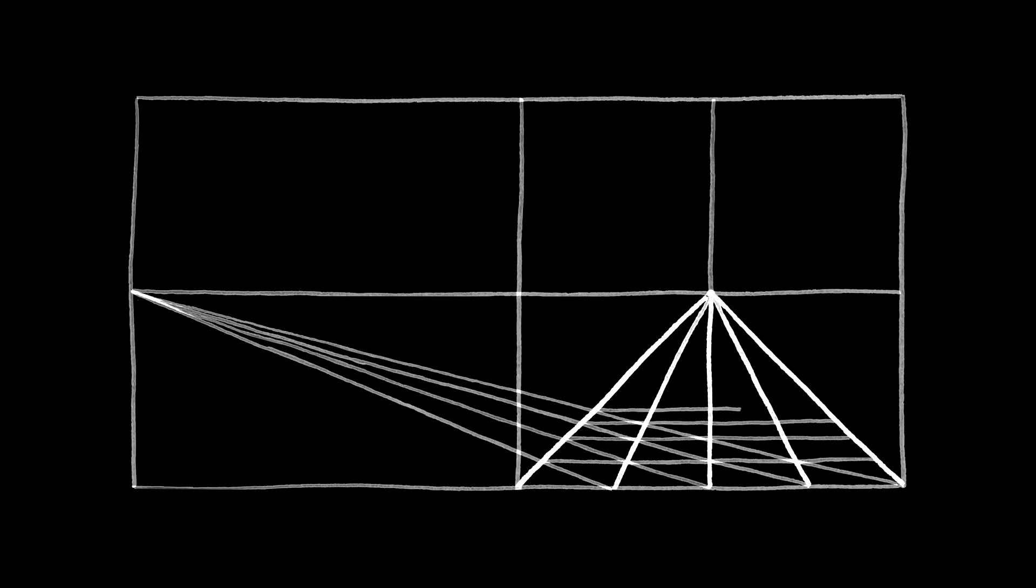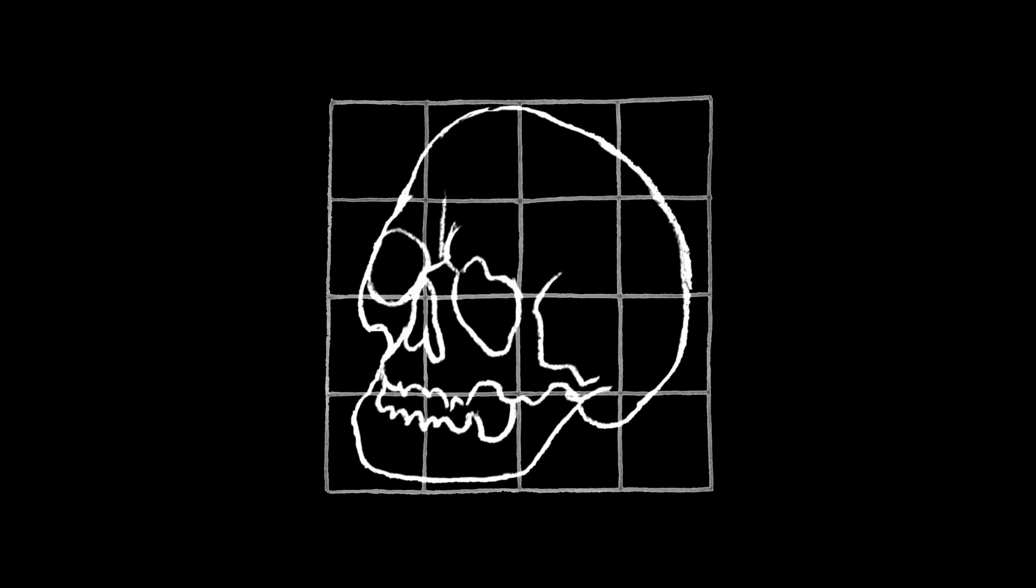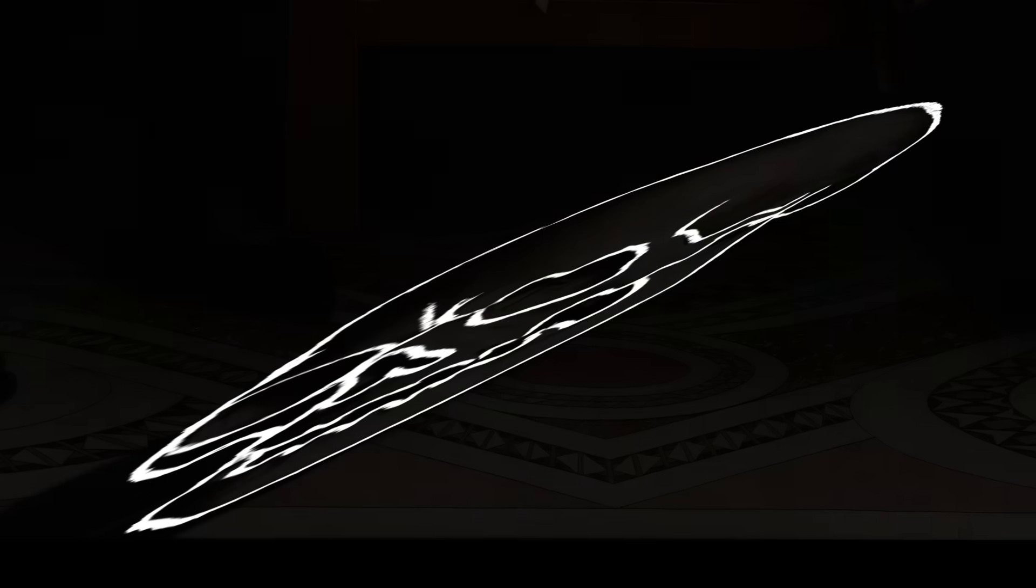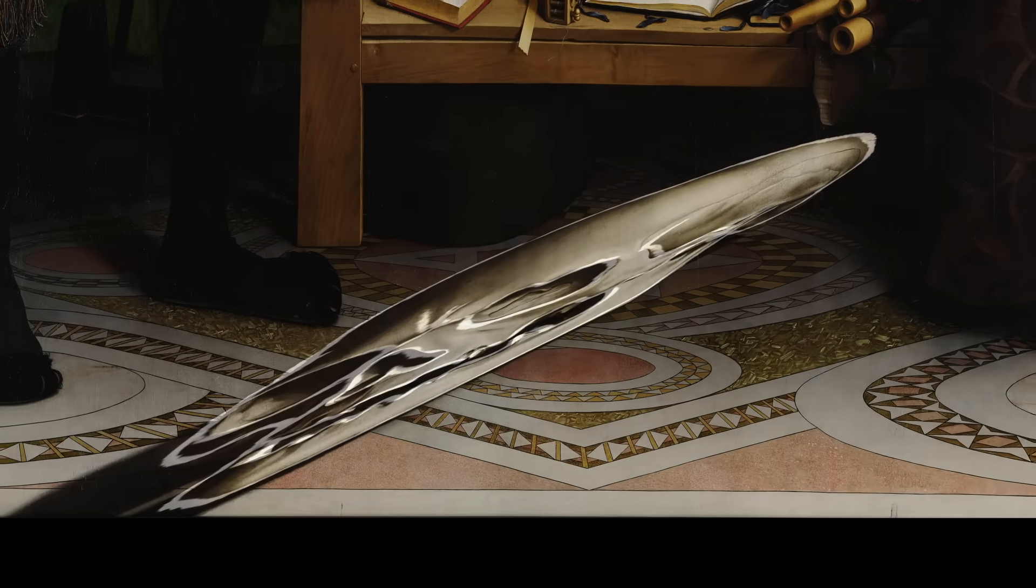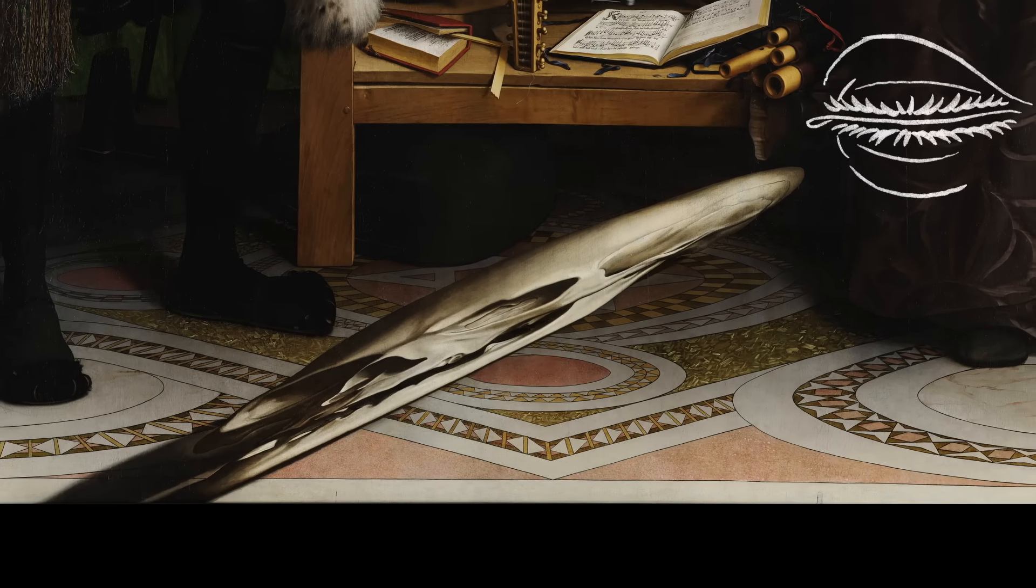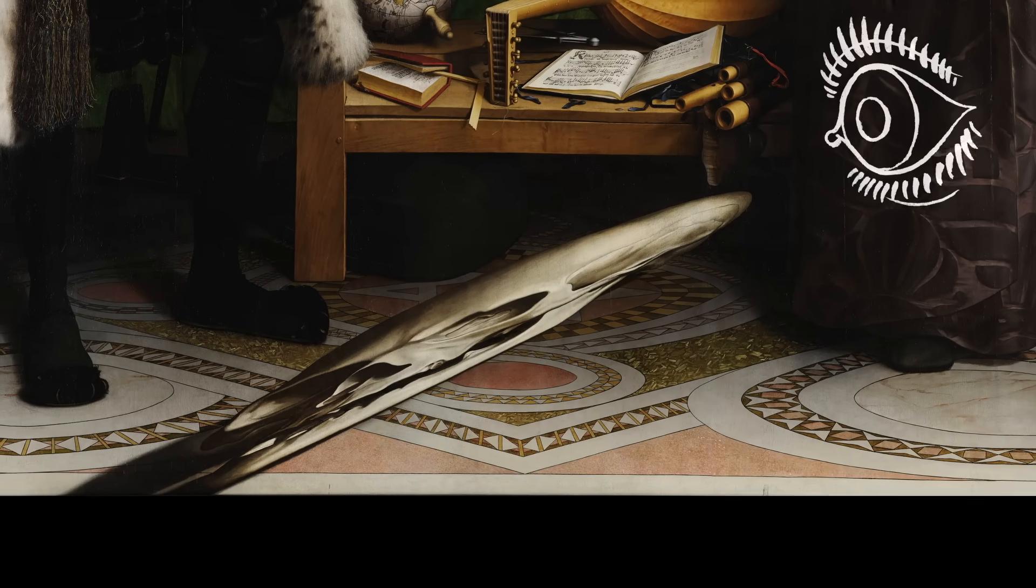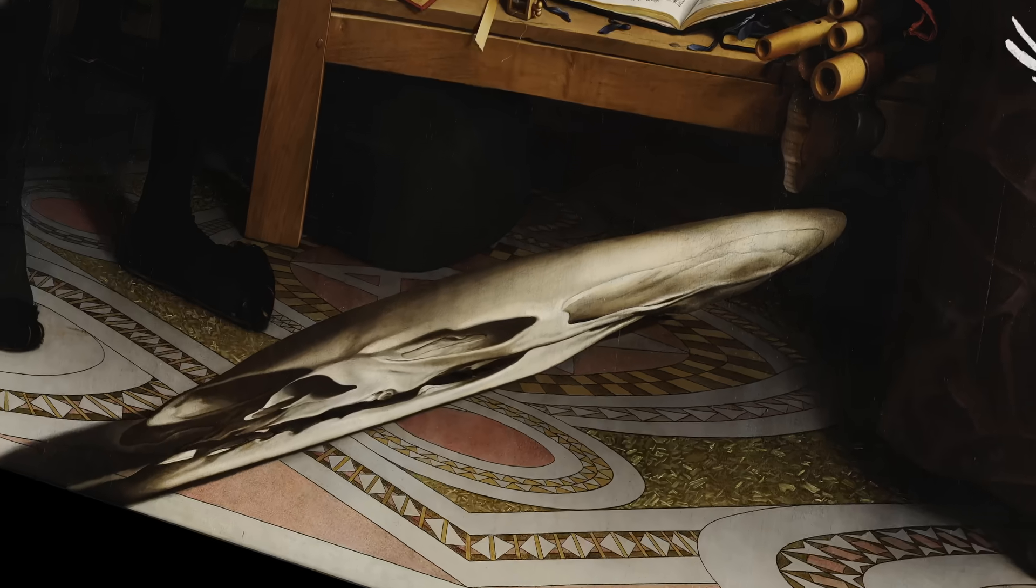So that's a standard perspective drawing. With an anamorphic drawing, like the Ambassadors, directly facing the canvas makes the image look stretched and distorted. But put your eye in exactly the right spot, way off to the side, and the skull materializes.